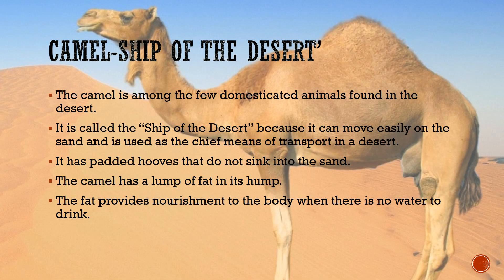Now let's learn about the camel, also known as the Ship of the Desert. The camel is among the few domesticated animals found in the desert. It is called the Ship of the Desert because it can move easily on the sand and is used as the chief means of transport in a desert. It has padded hooves that do not sink into the sand.